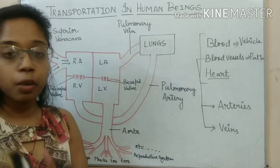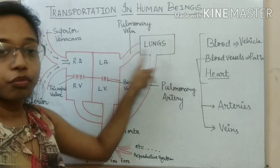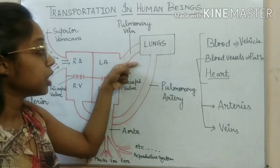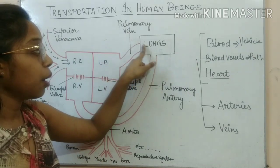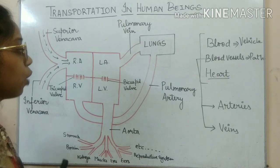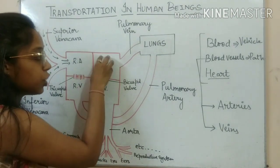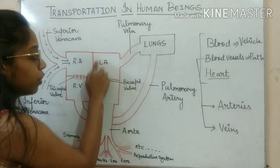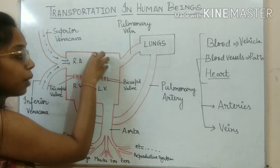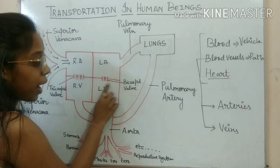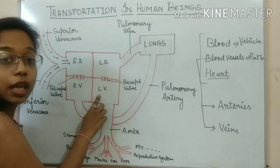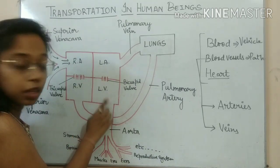This oxygenated blood returns to the heart from the lungs via a vein called the pulmonary vein. It is called a vein because the blood goes from a body part back to the heart. Now the oxygenated blood fills into the left auricle. While blood is filling in this chamber, the valves remain closed. Once the blood is completely filled, the bicuspid valve opens and blood comes into the left ventricle.